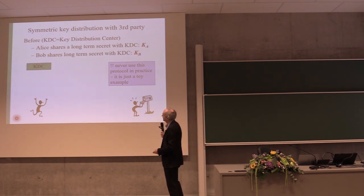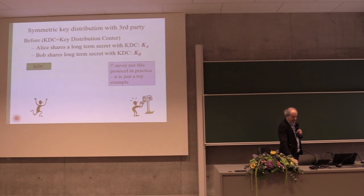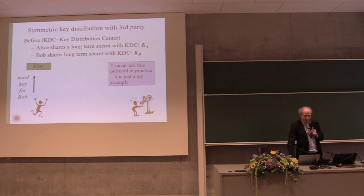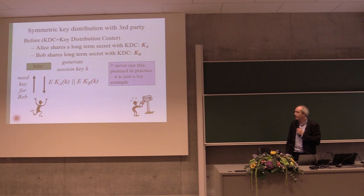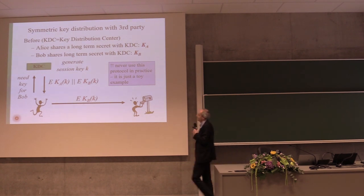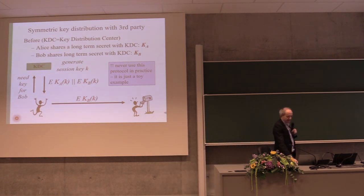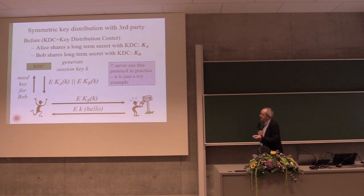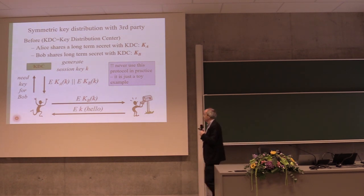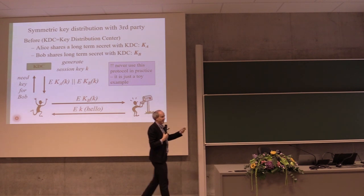The idea is that Alice and Bob each share a secret key with a central party called the Key Distribution Center (KDC). If Alice wants to talk to Bob, she asks the KDC for a key for Bob. The KDC makes a session key, encrypts it under the key shared with Alice, and also encrypts it under the key shared with Bob. Alice extracts the session key from the first field, and takes the second field — which she cannot decrypt — and sends it to Bob. Bob decrypts it, gets the key, and can confirm he has it to Alice.